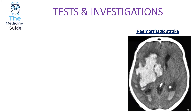For tests and investigations, a ROSIER score is performed at hospital admission because it excludes hyperglycaemia — a very common stroke mimic. A ROSIER score greater than zero suggests a stroke is very likely. The first-line imaging is a non-contrast CT head to exclude a hemorrhagic stroke, and all antiplatelets must be withheld until hemorrhage is excluded. MRI with diffusion-weighted imaging can also be performed, as a small ischemic stroke may not be visible on CT.